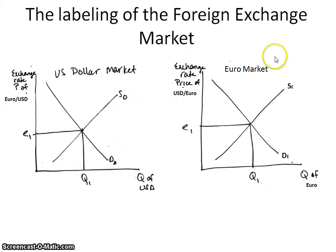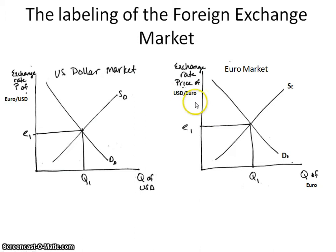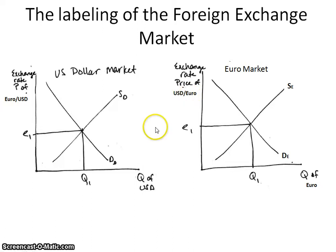For the euro market, the labeling works the same way — downward sloping demand curve, upward sloping supply curve. You've got the quantity of euros on the horizontal axis, and because it's on the horizontal axis, it has to be in the denominator. So we're looking at the exchange rate: the price of U.S. dollars per euro.